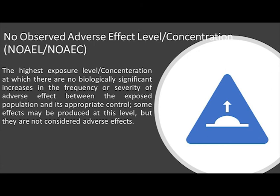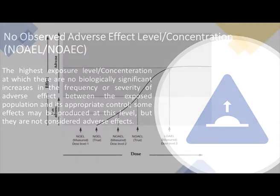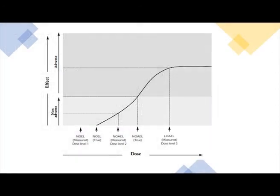Let us see what is NOAEL. NOAEL, or no observed adverse effect level or concentration (NOAEL or NOAEC), is the highest exposure level or concentration at which there are no biologically significant increases in the frequency or severity of adverse effects between the exposed population and its appropriate control. Some effects may be produced at this level, but they are not considered adverse effects. This graph is self-explanatory — the x-axis represents dose and the y-axis represents effect. An increase in dose leads from non-adverse to adverse effects, with NOAEL and LOAEL spotted for easy understanding.